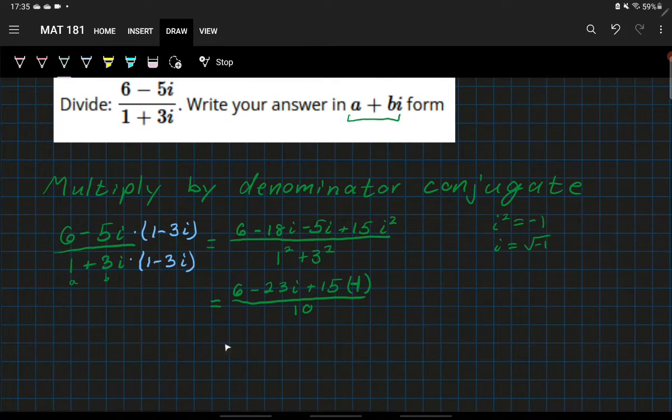Then we combine like terms and write it into that proper form. So we have six plus 15 times negative one, that is negative 15. So six minus 15 is negative nine minus 23i, all divided by 10. And then we can split up the fraction into the a plus bi form.